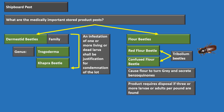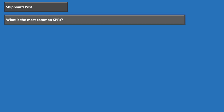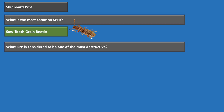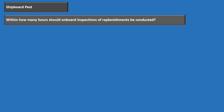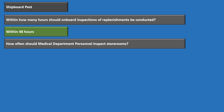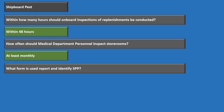The most common stored product pest is the sawtooth grain beetle. The most destructive stored product pest is the rice weevil. The number one pest of dried fruits in storage is the Indian meal moth. Onboard inspections of replenishments must be conducted within 48 hours. Medical department personnel should inspect storerooms at least monthly. The form used to report and identify stored product pests is DD-1222, the Request for and Results of Tests.